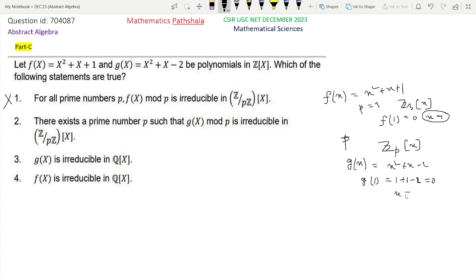That is, always x = 1 is a root of g(x) in Zp[x] for any prime number p. That means also g is not irreducible in Zp[x] for every prime number p.